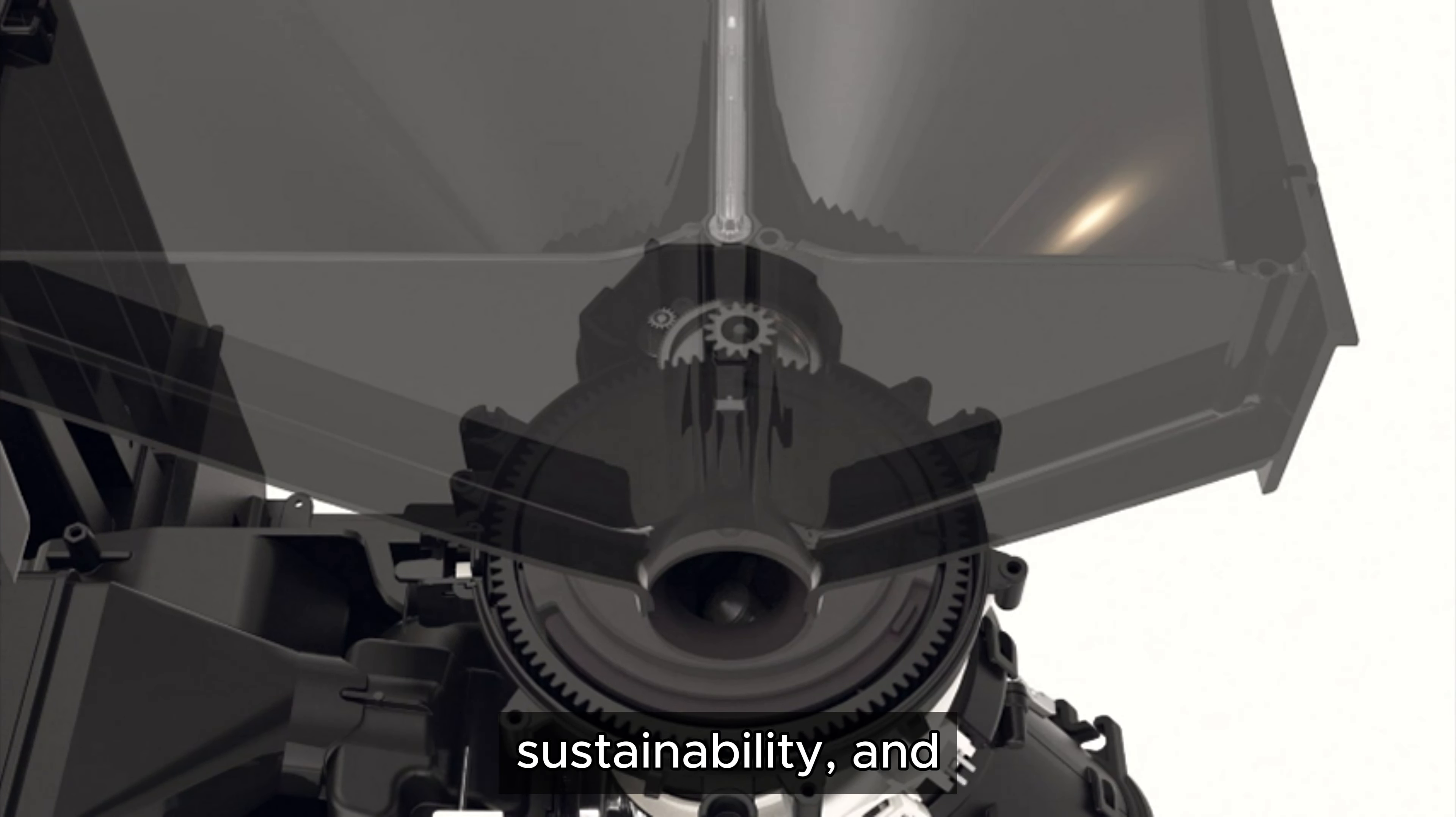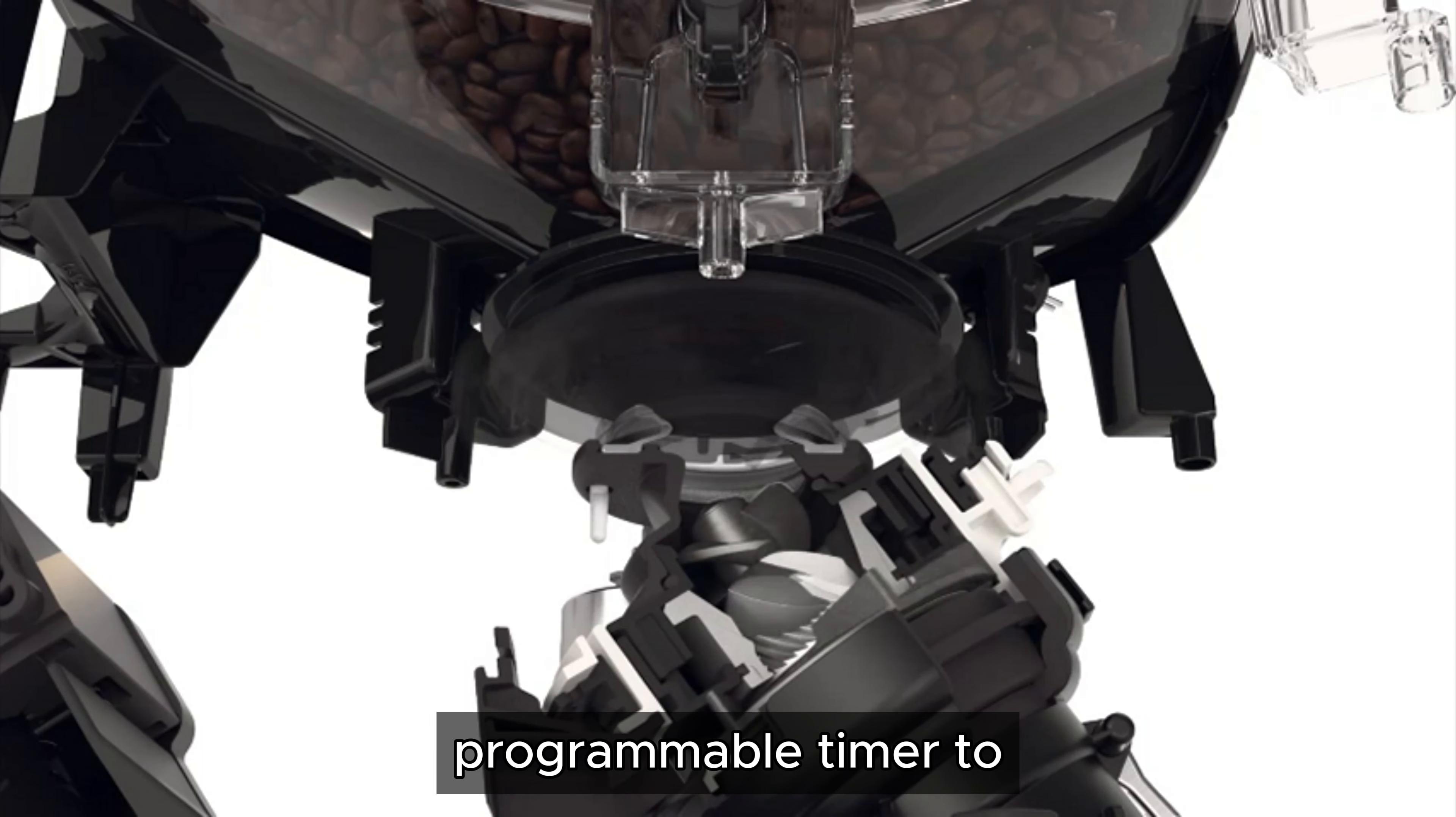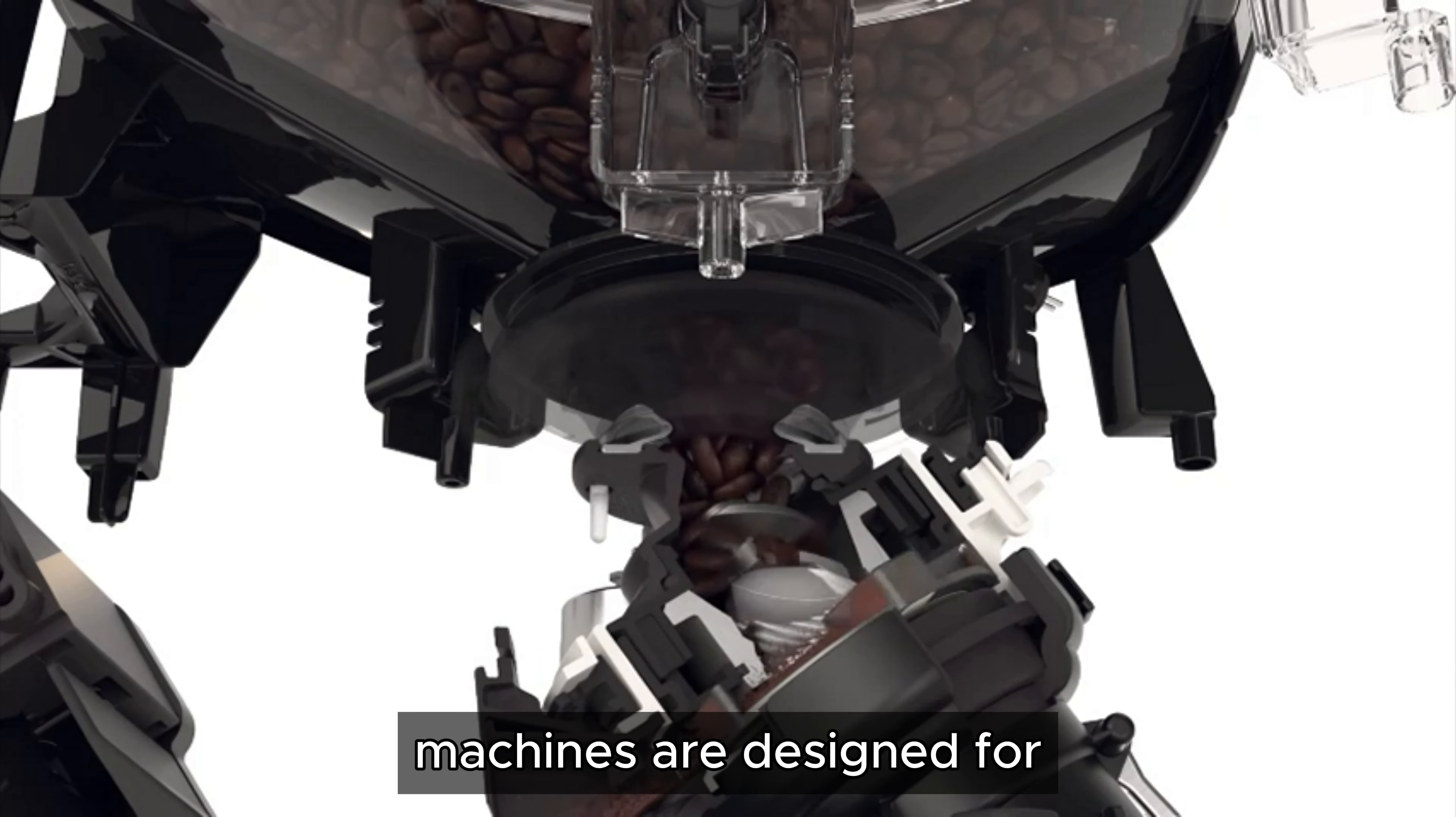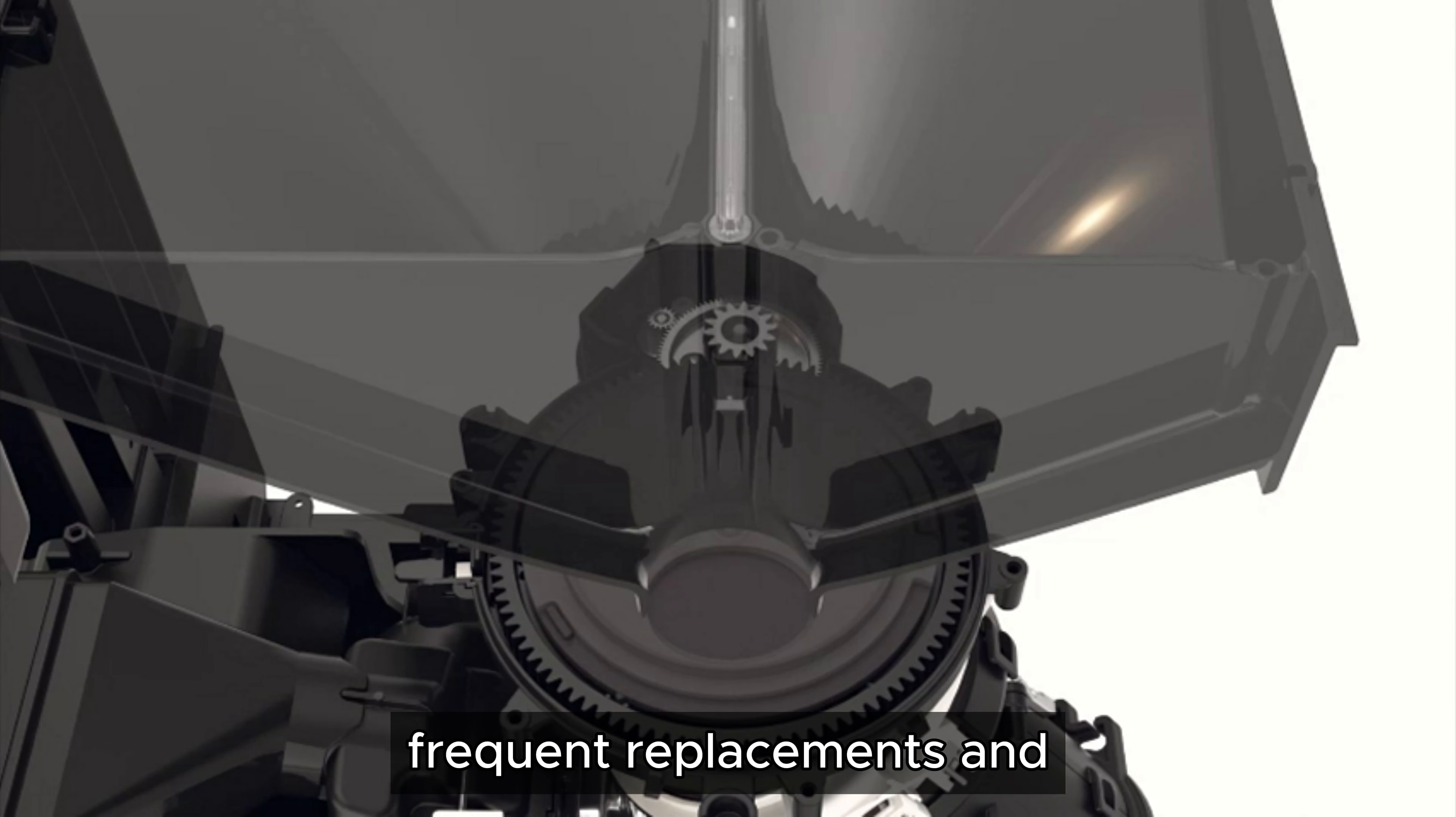Miele is committed to sustainability, and the CM7550 includes several eco-friendly features. The machine has an energy-saving mode and a programmable timer to reduce energy consumption. Additionally, Miele's coffee machines are designed for long-lasting performance, reducing the need for frequent replacements and minimizing environmental impact.